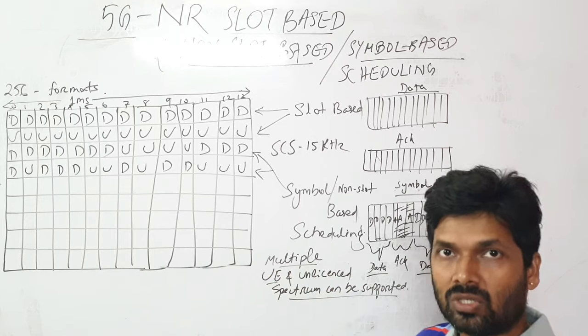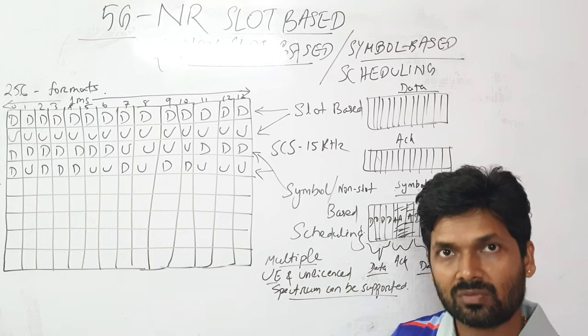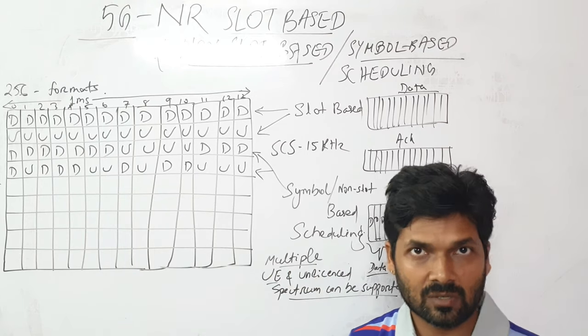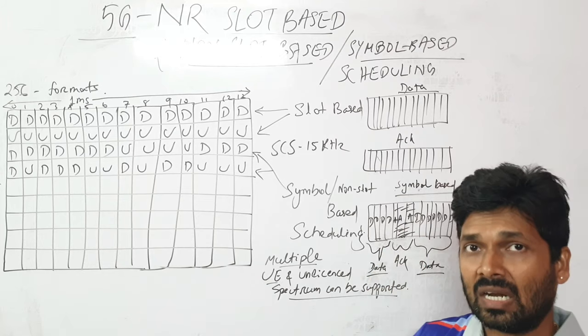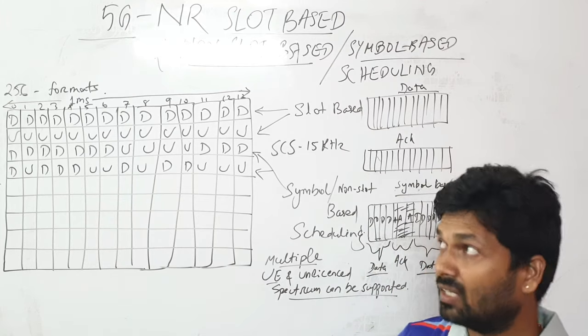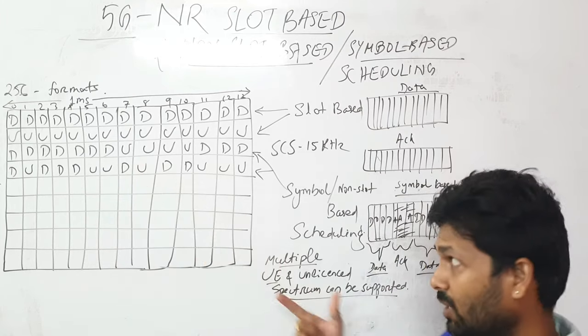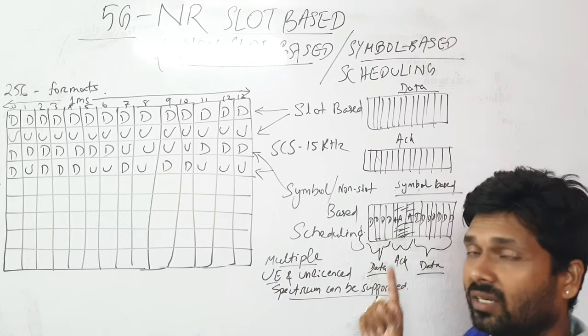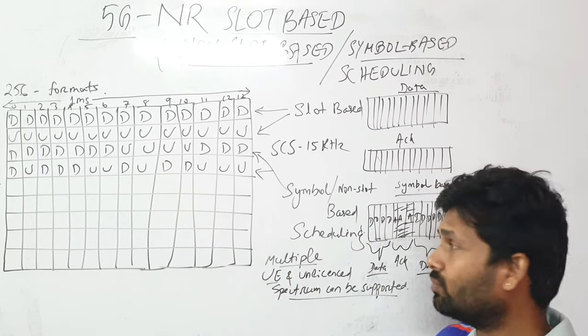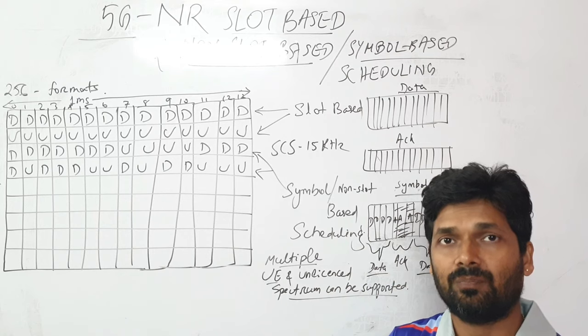There are many merits to this one. We can use this for URLLC use cases. Second, we can address multiple UEs in the same slot. I can send these four downlink data for maybe four different UEs.